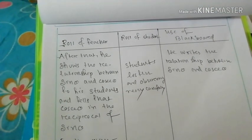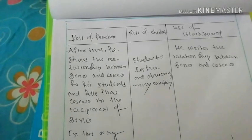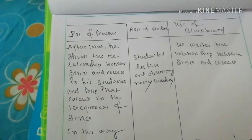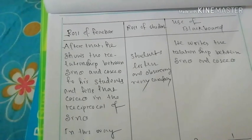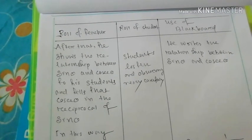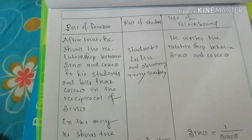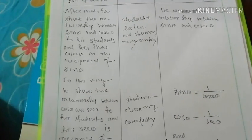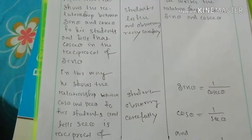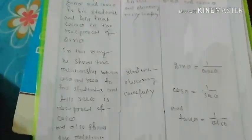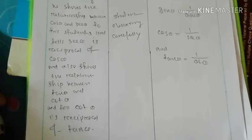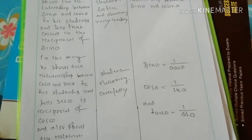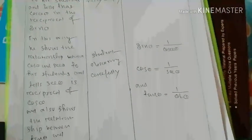Rule of teacher and student: use of log board. After that, the teacher shows the relationship between sin theta and cos theta to the students and tells that cosec theta is the reciprocal of sin theta. The student listens and observes very carefully. He writes the relationship between sin theta and cos theta on the log board. In this way, he also shows the relationship between cos theta and sec theta, telling the students that sec theta is the reciprocal of cos theta, and also shows the relationship between tan theta and cot theta. The student observes carefully. After that, the teacher writes on the log board: sin theta = 1/cosec theta, cos theta = 1/sec theta, and tan theta = 1/cot theta.